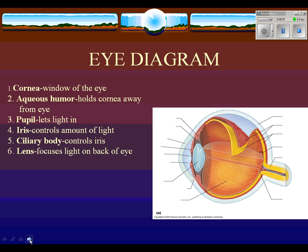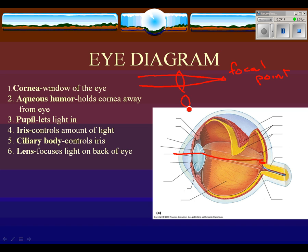Number six is the lens. The lens's job is to focus light directly on the back of the eye. If you've ever looked through a lens, you know it bends light to a focal point. Your lens can be bigger or smaller depending on how close or far away an object is. This changes the focal point and allows you to look at things up close or far away. Things far away seem small, so the lens doesn't have to bend light as much as it does for things close up.